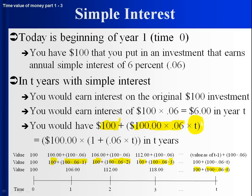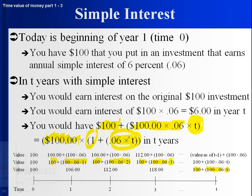If you want, you can use algebra — pull out the $100. So you would have $100 times (1 + 6% × T). The term circled in orange captures how much you would have in interest at the end of T years, and the other term captures the fact that you get your original $100 back. Add that all up and that's how much you have in T years.